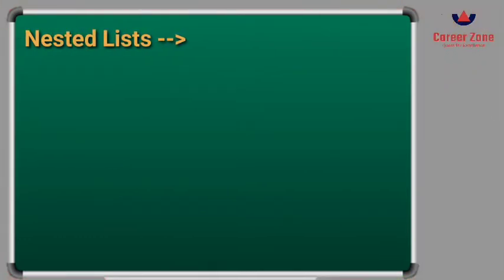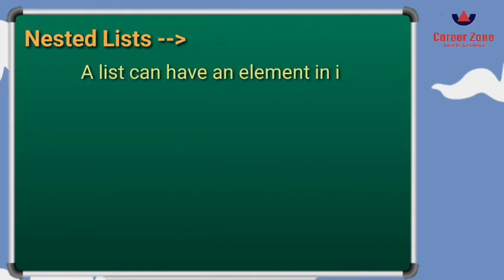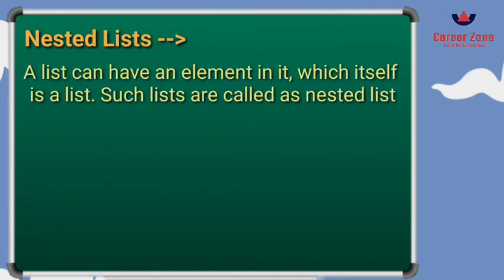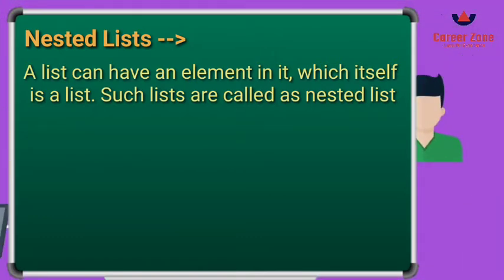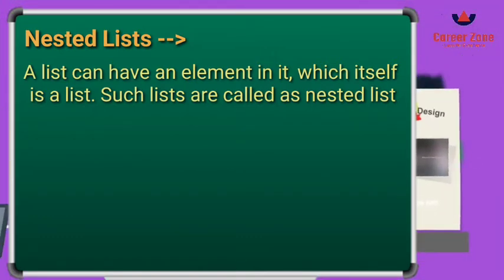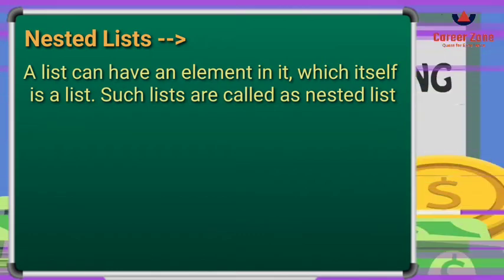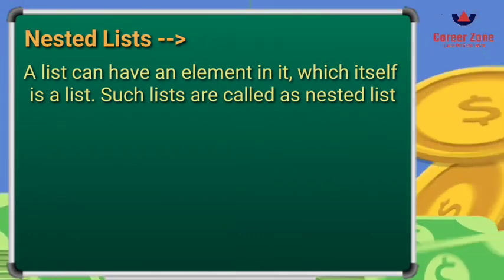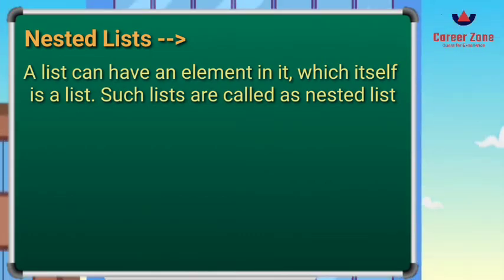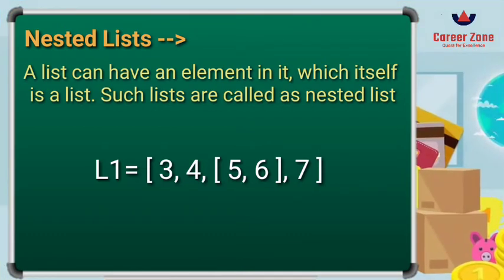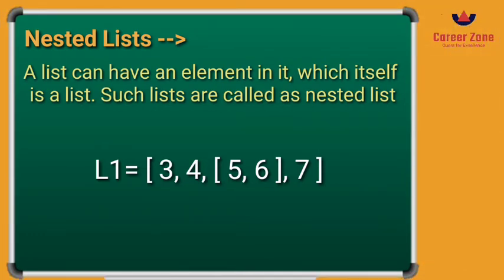Moving forward, we have the third list type which is nested list. A list which has an element that itself is a list is called a nested list — or simply, a list within a list. Let us see the example of a nested list.